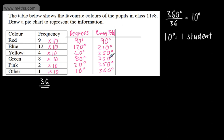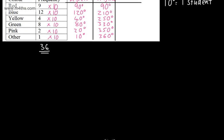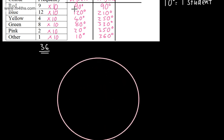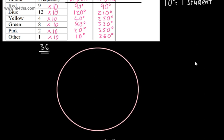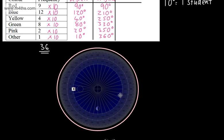The reason I'm doing a running total is so when I draw the pie chart I don't make a mistake. Sometimes students start at 0, go to 90, then start back at 0, go to 120, start back at 0, go to 40, and have it all bunched up. Instead, I'll use a circle and a 360-degree protractor. Starting at 0 at the top, I measure around to 90 degrees.